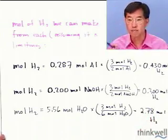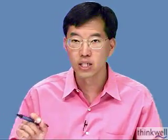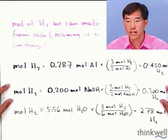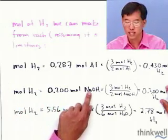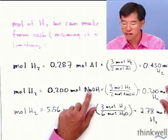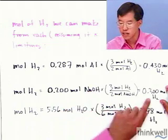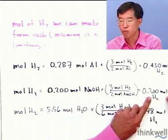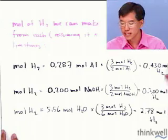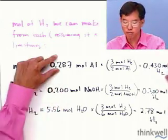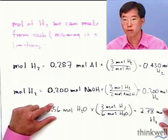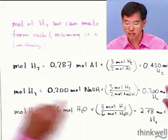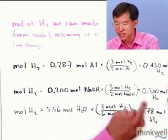Now recall the limiting reagent in method two is the reagent that gives the least amount of product. In this case, it's sodium hydroxide. So sodium hydroxide is the limiting reagent. And furthermore, the theoretical yield of hydrogen is 0.300 moles, right? It's neither of these two numbers because we'd run out of sodium hydroxide before we used up all the aluminum or before we used up all of the water. So this is the limiting reagent and this is the theoretical yield.